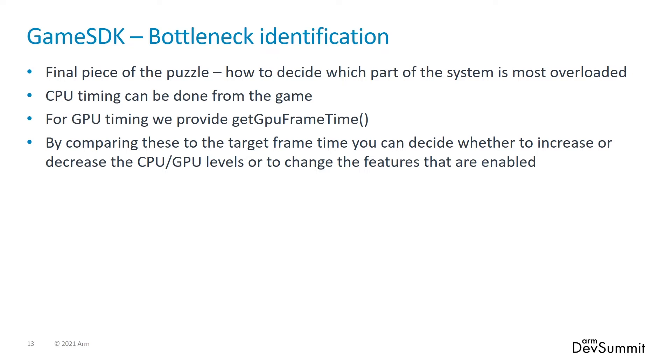Adaptive performance inside Unity uses all of these parts of the API to help you control how your game scales dynamically to maintain frame rate stability.